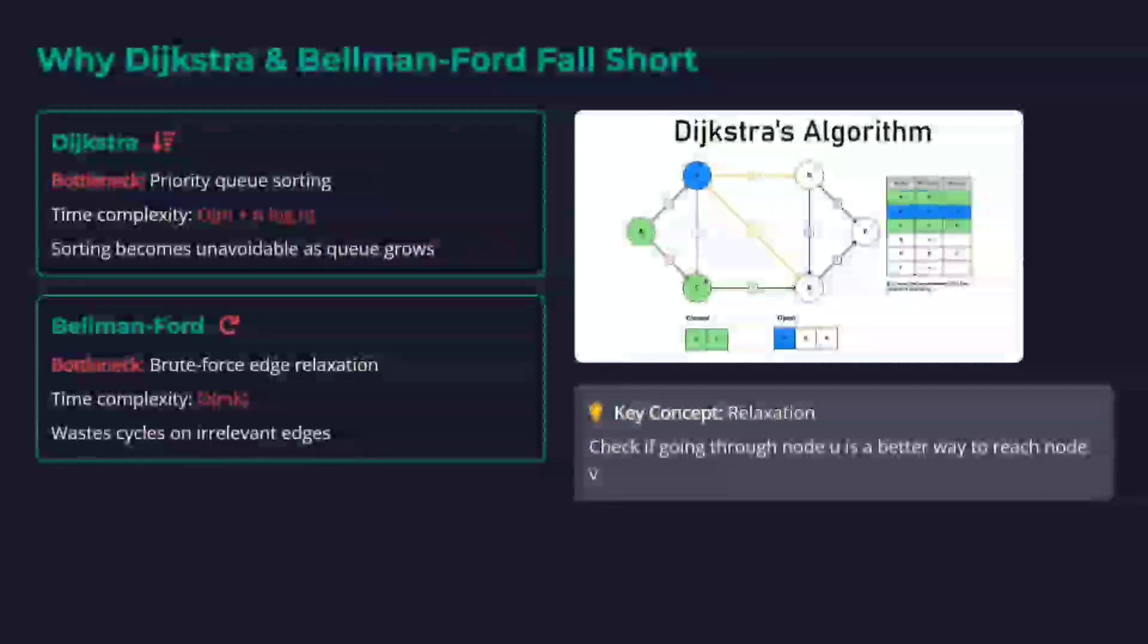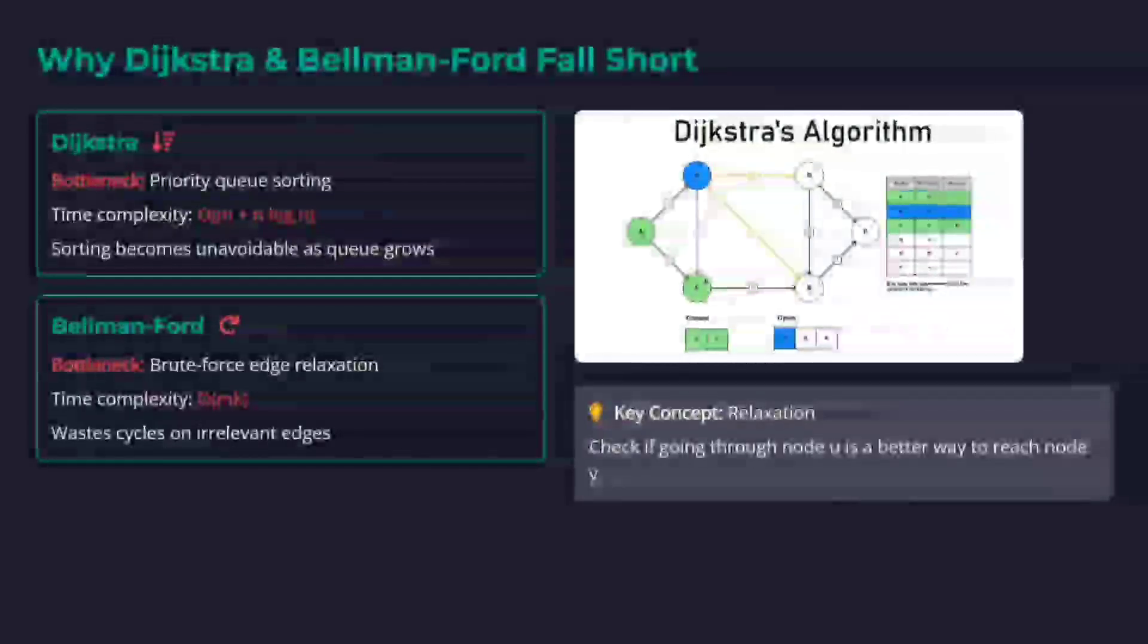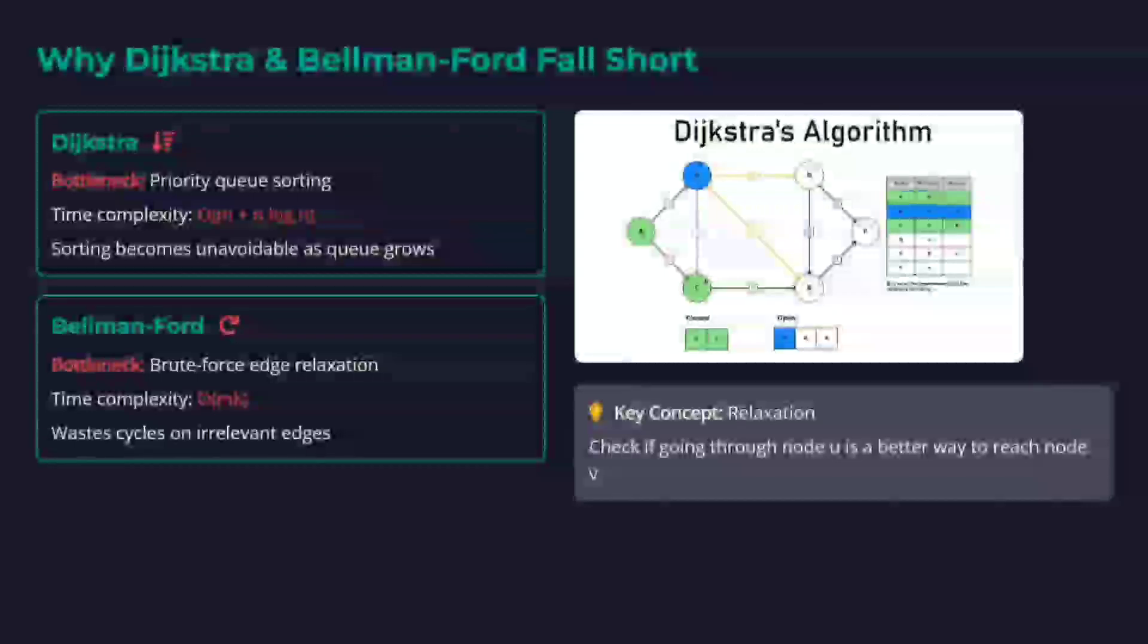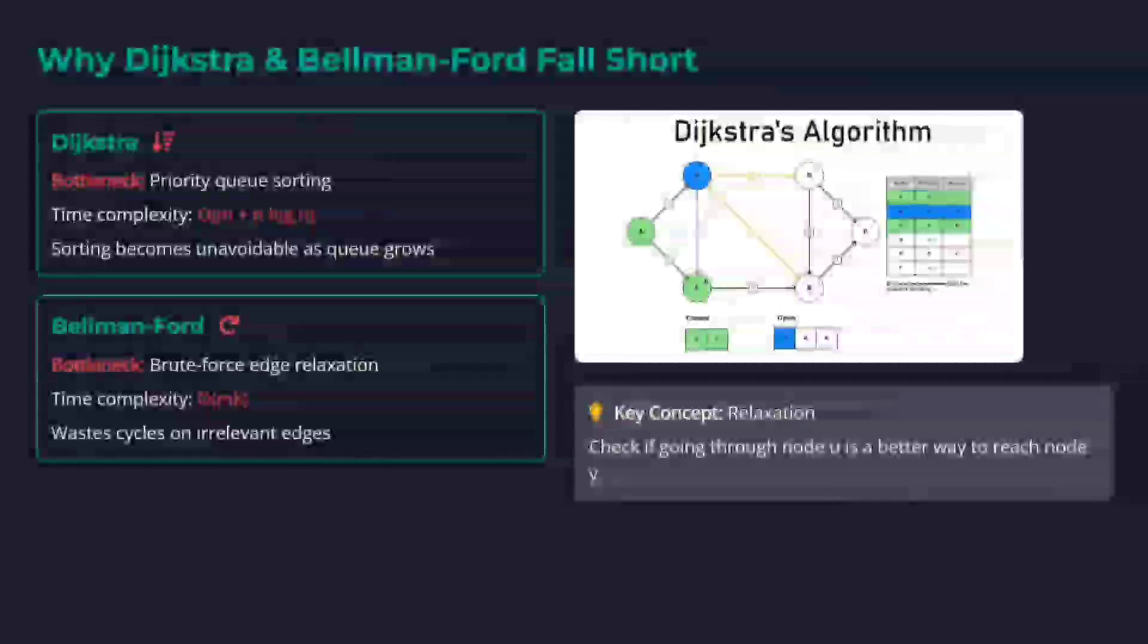There is a key concept in these algorithms called relaxation: checking if going through node u is a better way to reach node v. If yes, the distance gets updated. This is called relaxation.